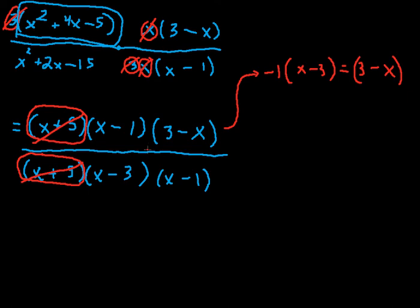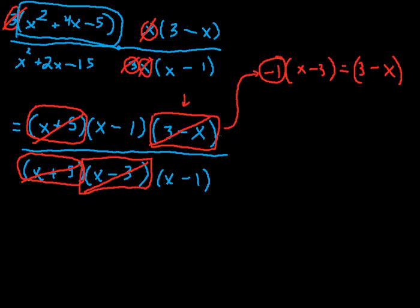Because it distributes, I have a minus x and a plus 3, and then I just rearrange them. So what I'm saying here is that I can cancel this x minus 3 and 3 minus x. And what I'll be left over with is this negative 1, because I factored the negative 1 out of this expression.